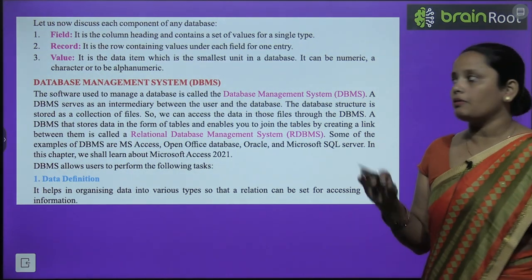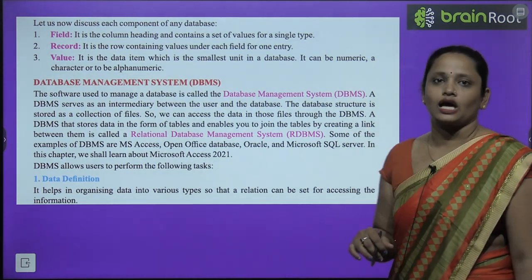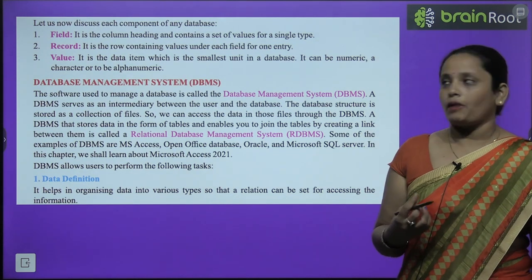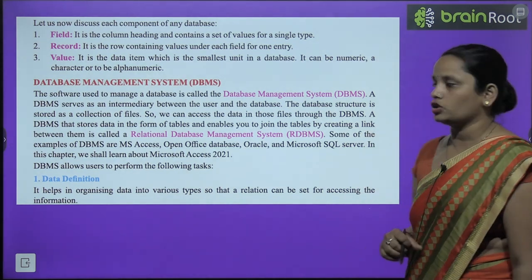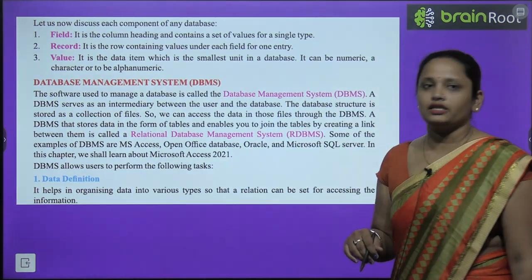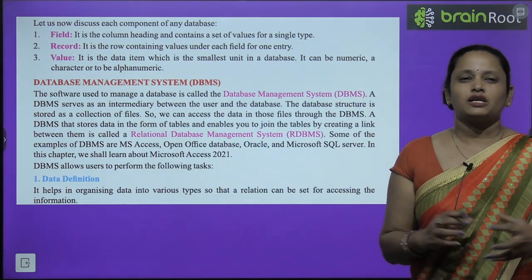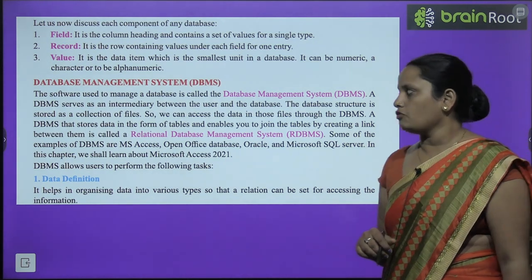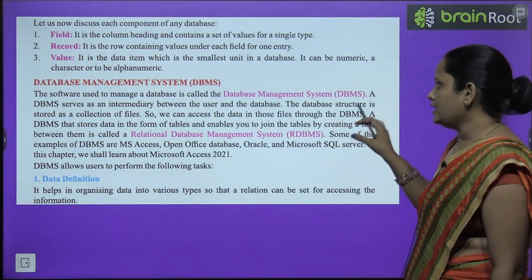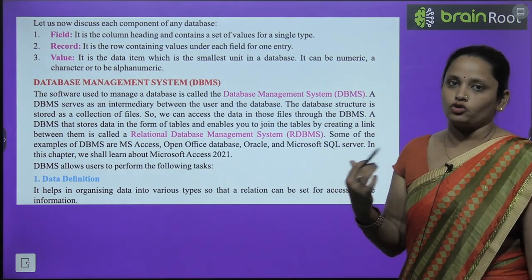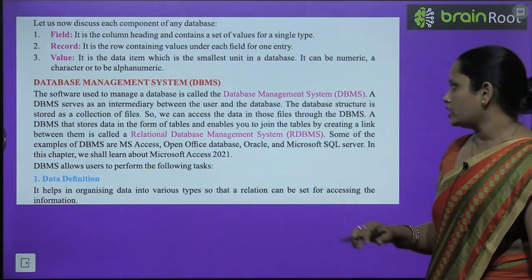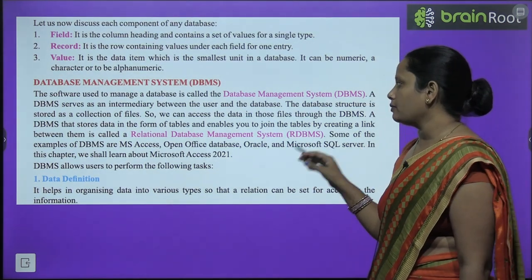Ab hum padhenge database management system — DBMS kya hota hai. The software used to manage a database is called DBMS. Toh is data ko manage karne ke liye hamen DBMS ki zarurat hoti hai, jise database management system kehte hain. The DBMS server is an intermediary between the user and the database — database aur user ke beech mein link ka kaam karta hai. Database ka structure files mein collect kiya jata hai, jisse hum in data ko easily access kar sakte hain.